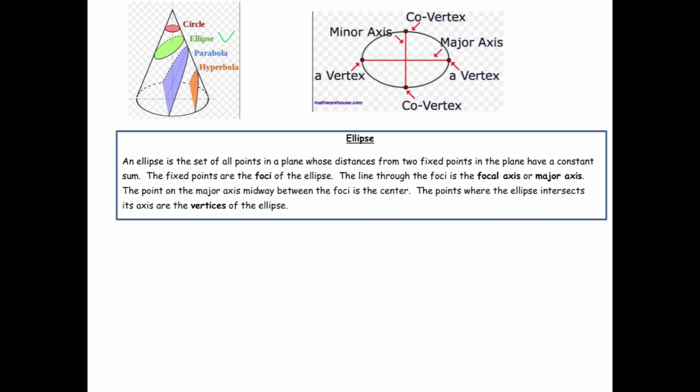Those fixed points are called foci, and the line through those foci is called the focal axis or the major axis. The point on the major axis midway between the two foci is the center, and the points where the ellipse intersects its axis are called the vertices.